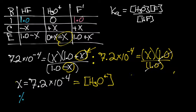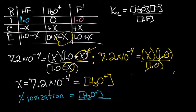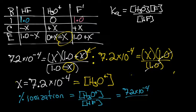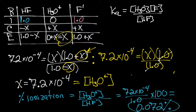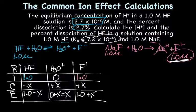So percent ionization equals the final hydronium ion concentration divided by the initial acid concentration. So that's going to be 7.2 x 10^-4 divided by 1.0 times 100. And that gives us a percent ionization of 0.072%, which is much, much less than the ionization of HF when it's just HF and water.